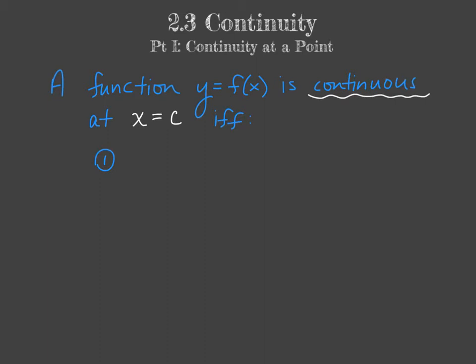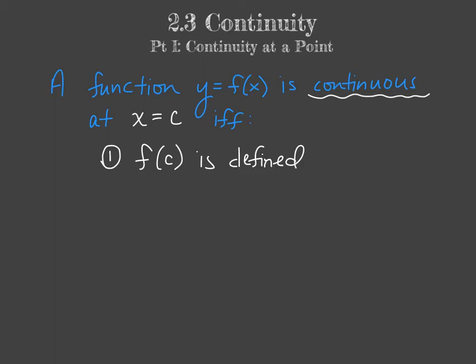Here is the calculus definition of continuity at a point. We say that a function f of x is continuous at x equals c — where c is our x value — if and only if (IFF, which we use a lot in proofs) three things hold. First, f of c must be defined, meaning when we plug c in, we have a well-defined y value — there is a coordinate point (c, f(c)). Second, the limit as x goes to c of our function must exist, meaning both the left and right-sided limits must exist and be the same value.